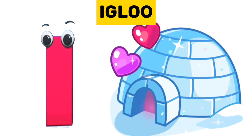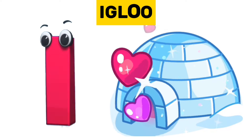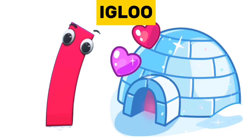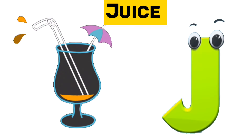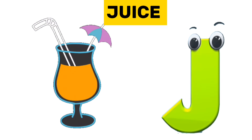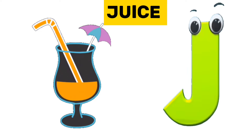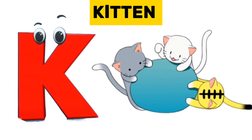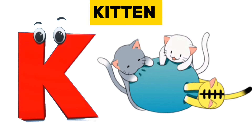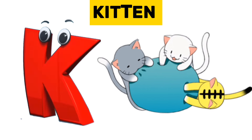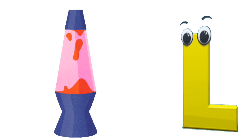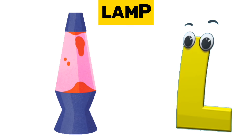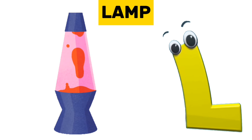I is for igloo. J is for juice. K is for kitten. L is for lamp.